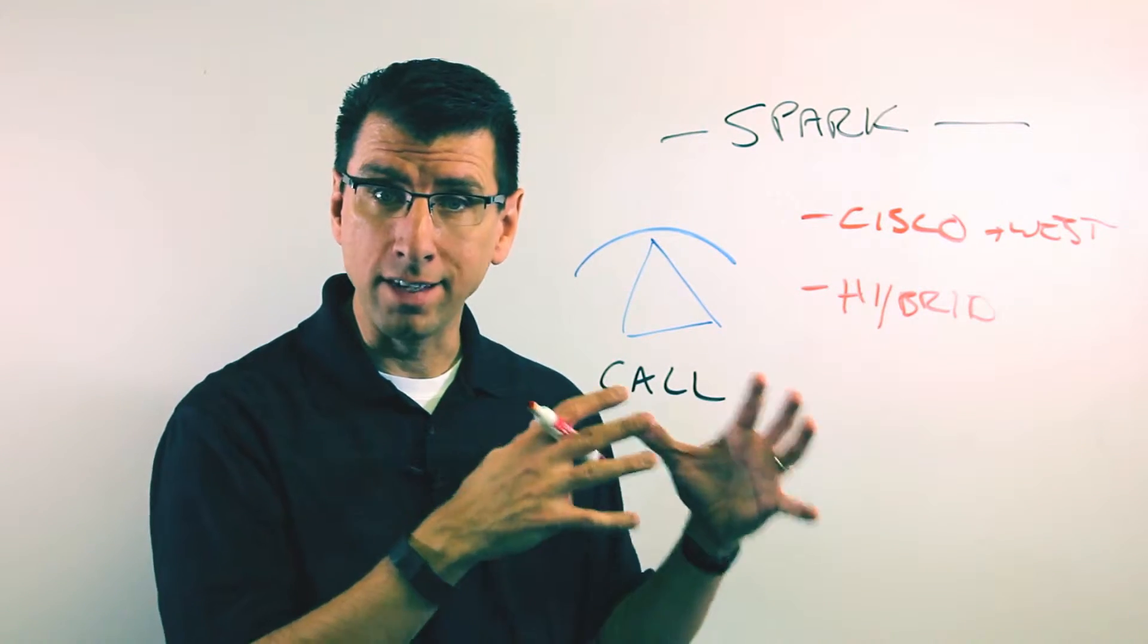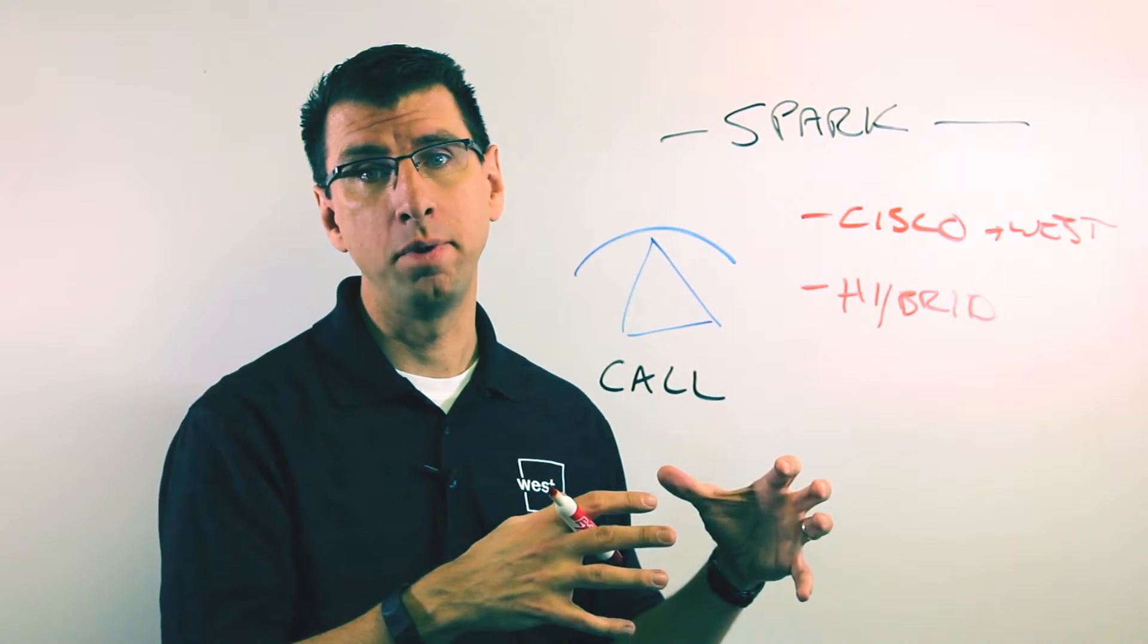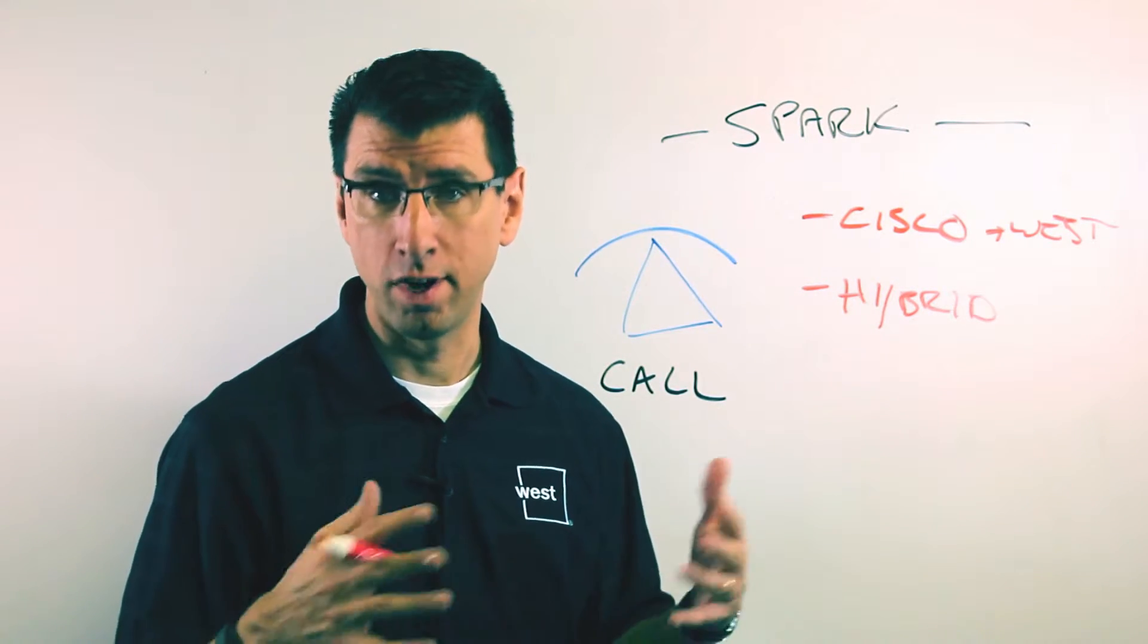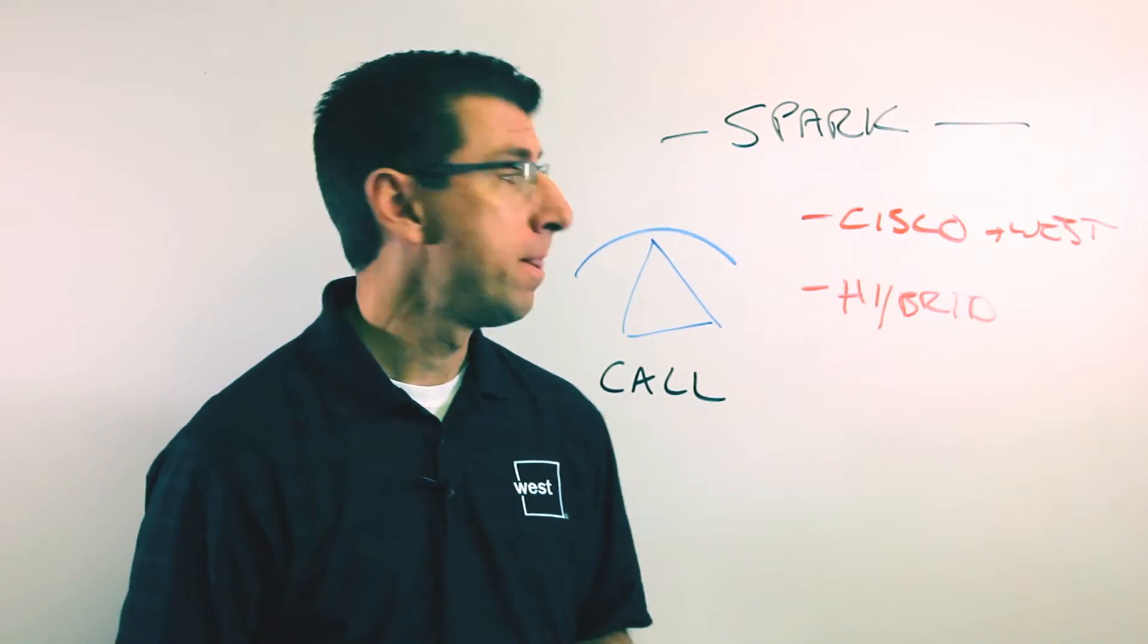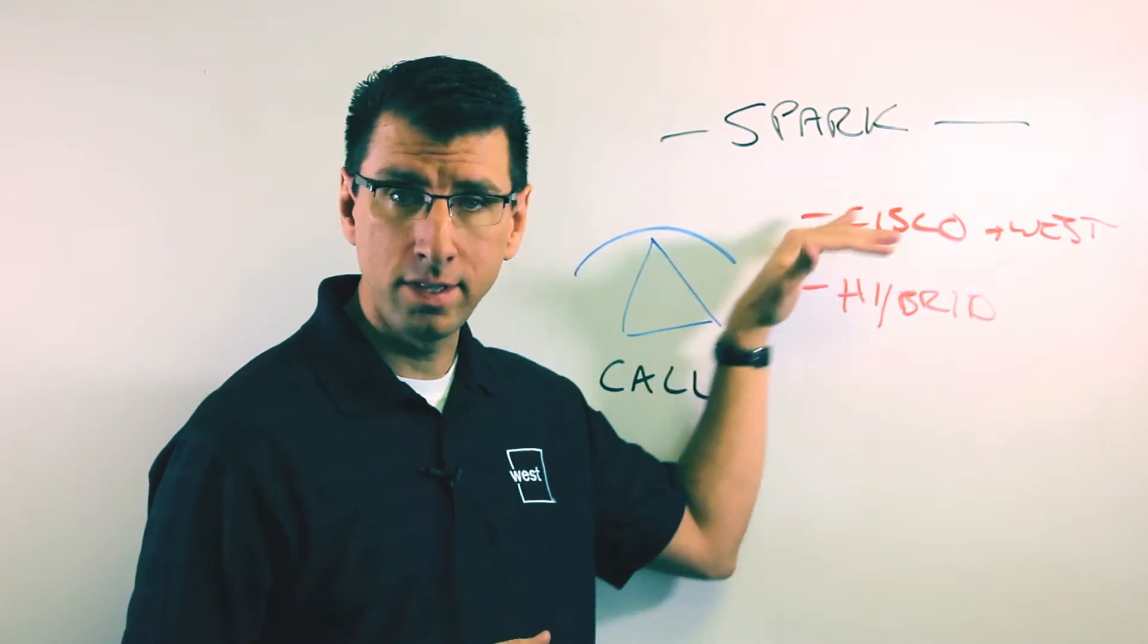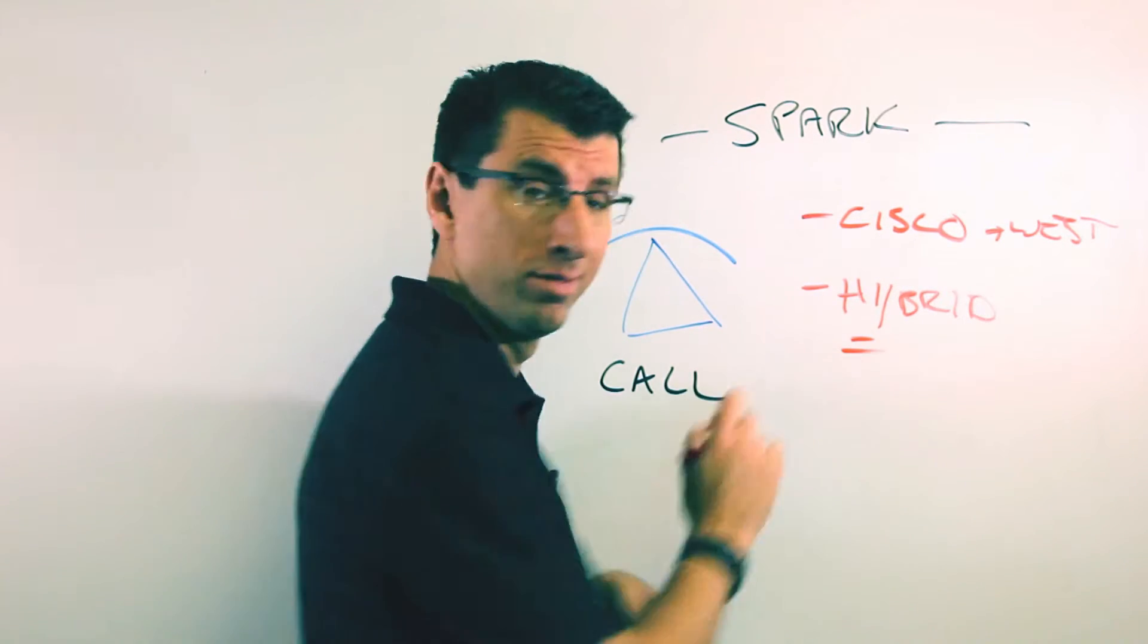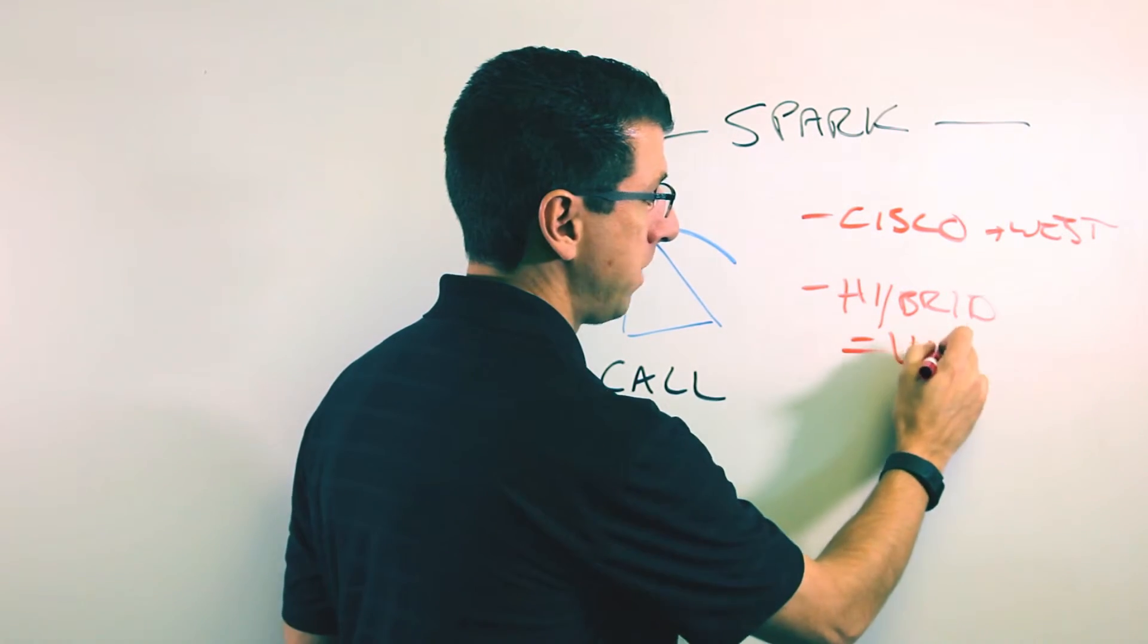So you can use that existing enterprise class calling capability and then extend that out into the other Spark scenarios, the ones we've talked about before, the messaging and the meeting. So you have a couple different choices. You can go with Cisco plus West, or you can go with Hybrid, which in our vernacular is going to equal VoiceMax CE.